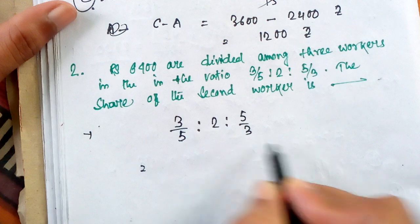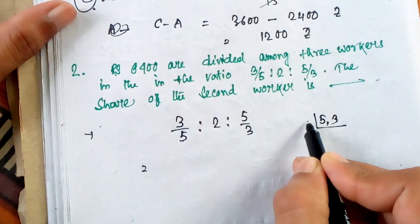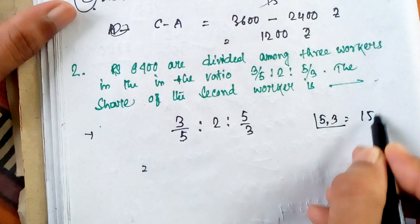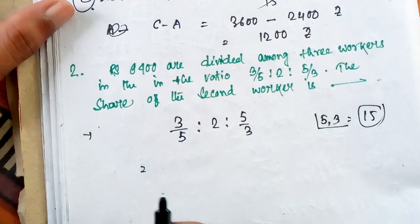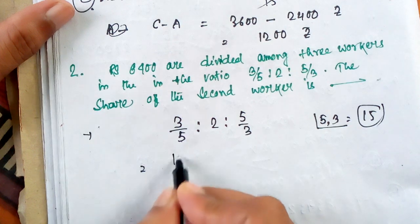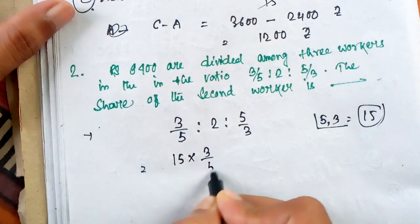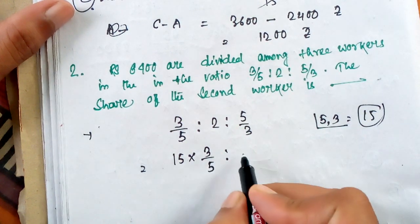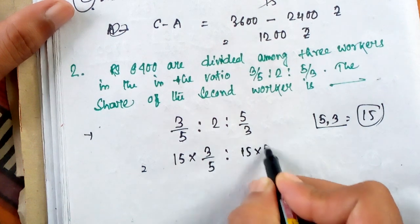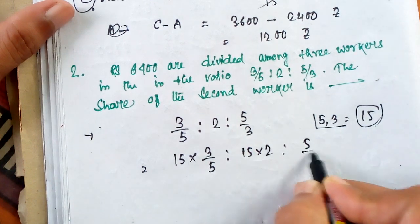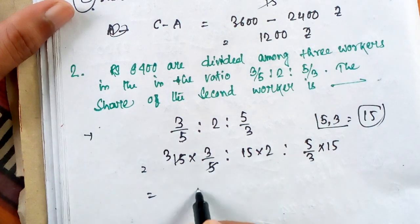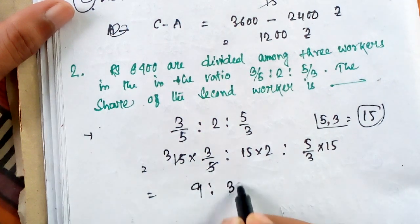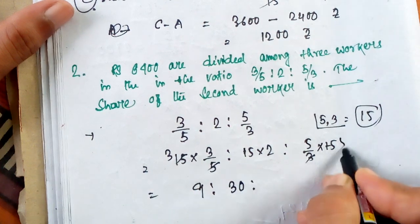And here, 5 and 3, the least common multiple is 15. And then, we can multiply 15 into both ratios. And now, here the simple ratio is obtained.